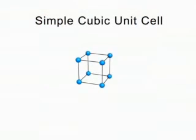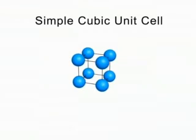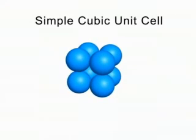All cubic unit cells have particles at the corners of a cube. The simple or primitive cubic unit cell has particles at the corners only. In reality, the particles lie as close to each other as possible.